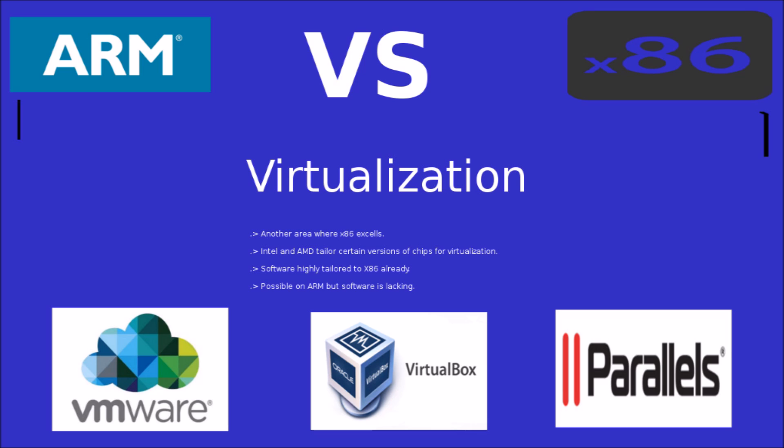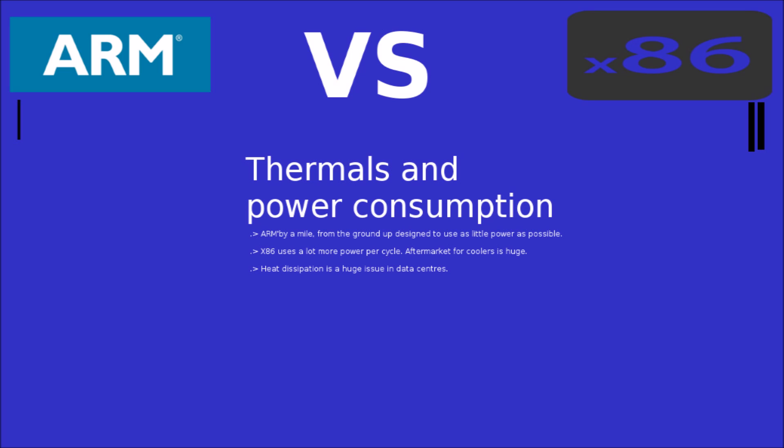Virtualization: this is another area where x86 excels. Most virtualization software is already running on x86 and highly tailored to the x86 architecture. In addition, Intel has actually tailored some of their processes to be even more favorable to virtualization. Virtualization can be done on ARM right now, but the software itself is lacking. Point to x86.